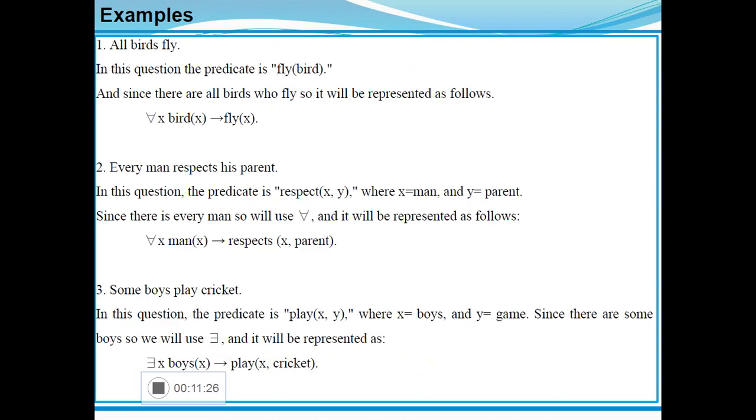Some examples to understand these two quantifiers. All bats fly. The predicate is fly(bird). Since there are all birds who fly, it is represented in the form: for all x, bats(x) belongs to fly(x). Another example: every man respects his parent. In this question the predicate is respect(x, y) where x is a man and y is a parent. Since there is every man, we will use for all. It will be represented in mathematical form: for all x, man(x) implies respect(x, parent). Now consider the third statement: some boys play cricket. In this question the predicate is play(x, y) where x is a boy and y is the game. Since there are some boys, we will use there exists. It is represented in mathematical form: there exists x, boys(x) implies play(x, cricket).